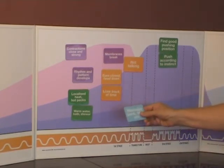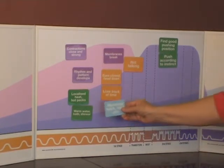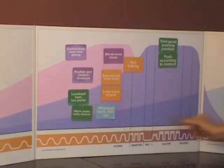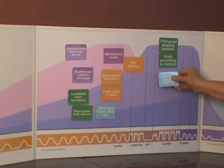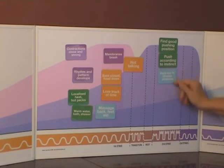The blue ones look at what your support team can be doing for you. Massaging your back and feet, or perhaps here, holding her in her chosen position for the birth of the baby.